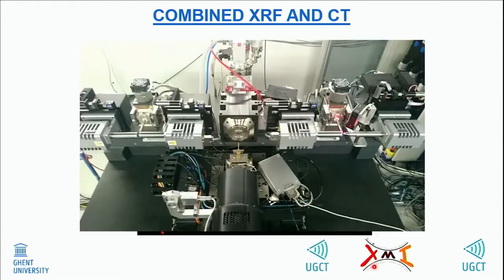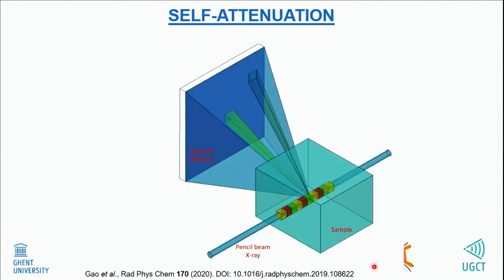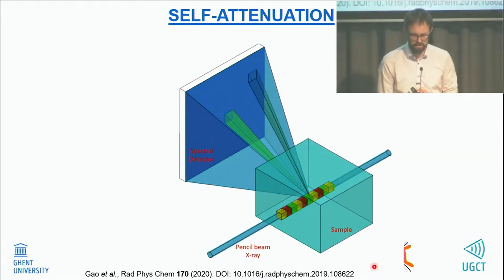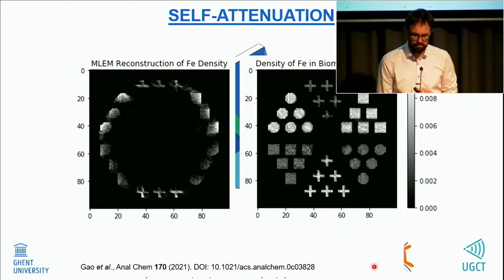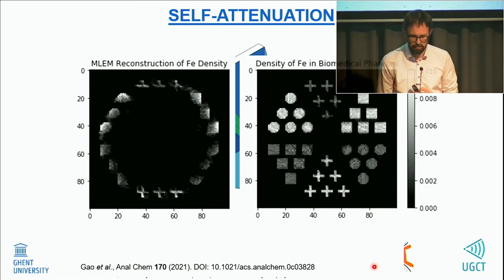The last pillar is multimodal imaging. For that we typically use the setup combining CT with XRF CT, where most of all the CT can be used to compensate for the self-attenuation or self-absorption of the XRF inside the object, and we can improve the results of XRF CT based on our attenuation volume.